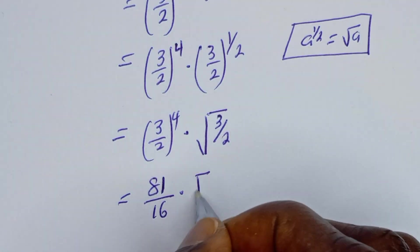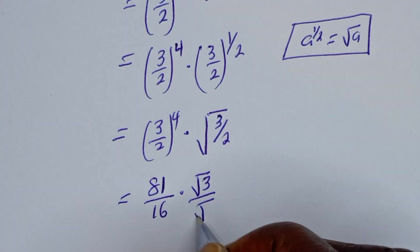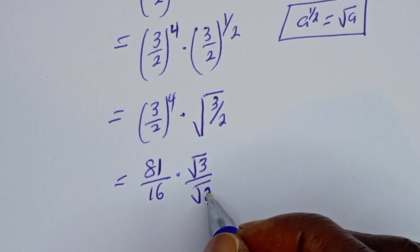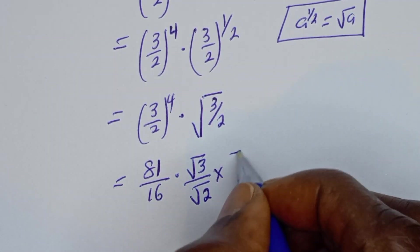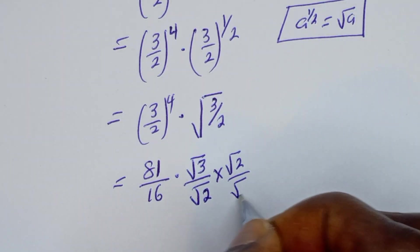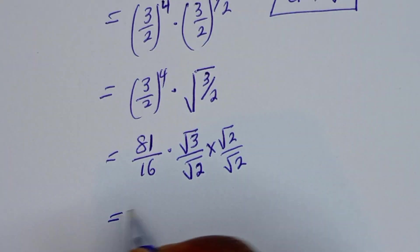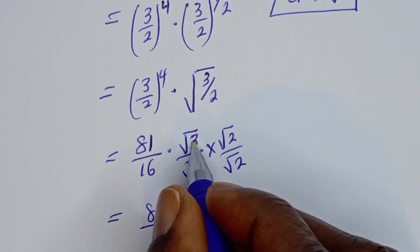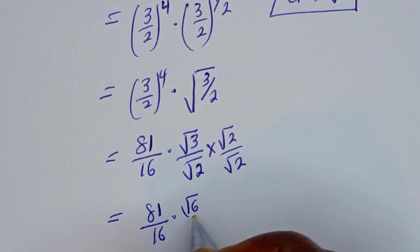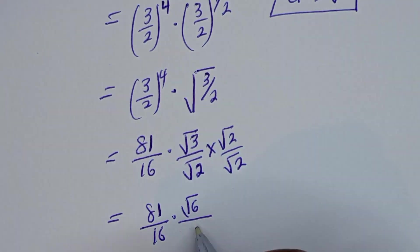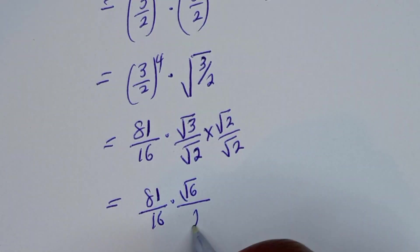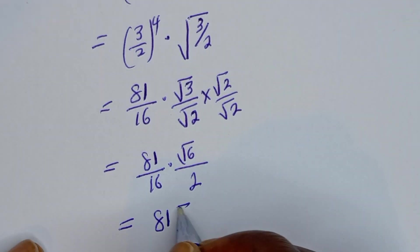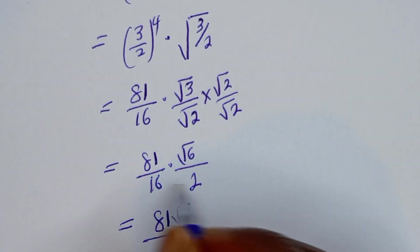3 over 2 to the power of 4 equals 81 over 16, multiplied by the square root of 3 over the square root of 2. Now let's rationalize by multiplying by the conjugate — root 2 over root 2. This equals 81 over 16 multiplied by root 3 times root 2, which is root 6, over root 2 times root 2, which is 2.